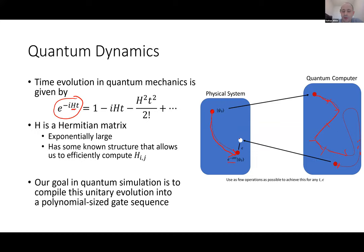We ideally want to build an algorithm that performs this compilation and ensures we can hit our target within error epsilon for any user-specified values of t and epsilon. The gold standard is to have the number of gate operations scale as poly(n), where n is the number of qubits. Since the size of H is 2^n by 2^n, having the quantum algorithm scale polynomially with n often gives us an exponential advantage over the best classical methods.